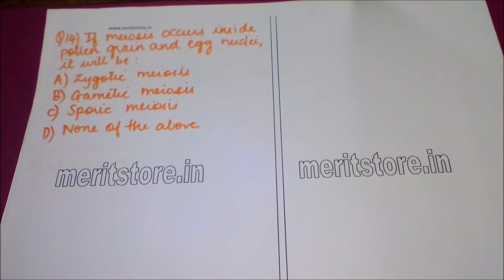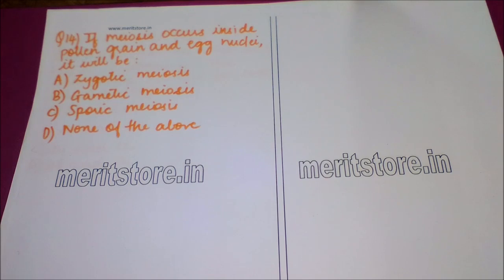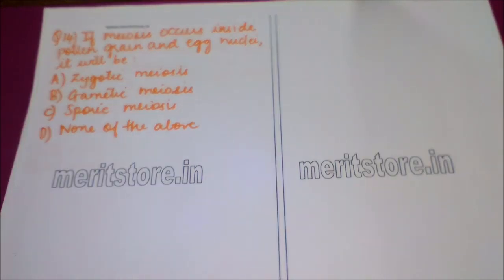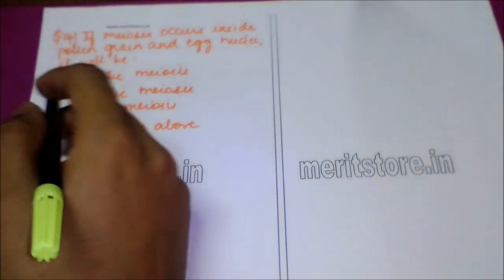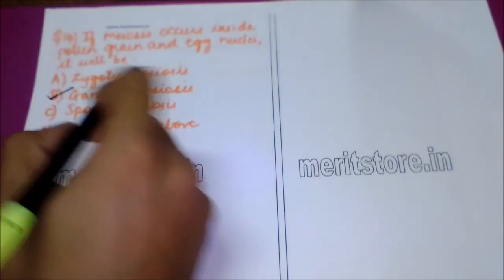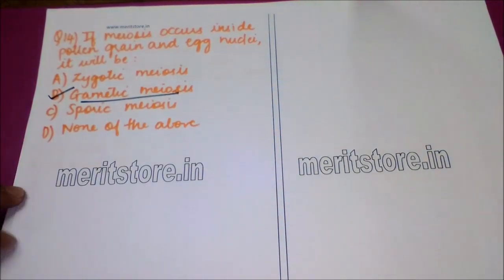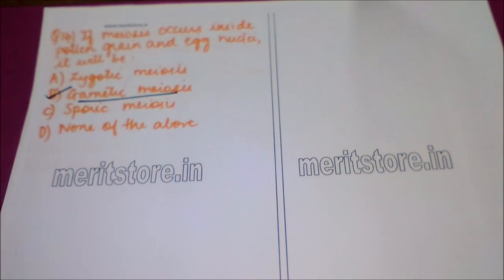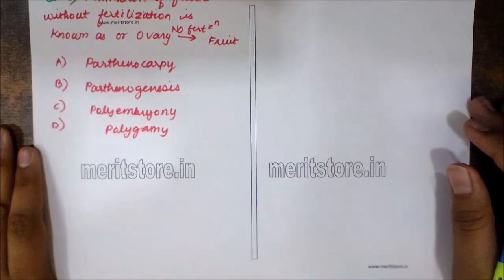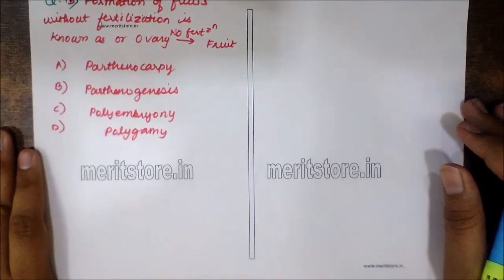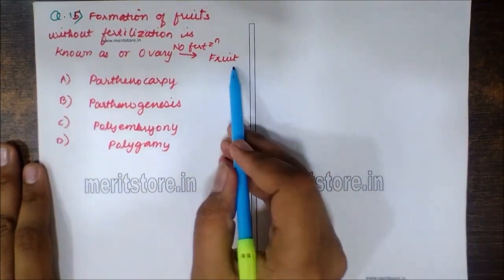The next question is: if meiosis occurs inside pollen grains and egg nuclei, it will be called? Option A: zygotic meiosis. Option B: gametic meiosis. Option C: sporic meiosis. Option D: none of the above. The answer is option B — gametic meiosis — because the pollen grain and egg nuclei are responsible for the formation of the male and female gametophytes.